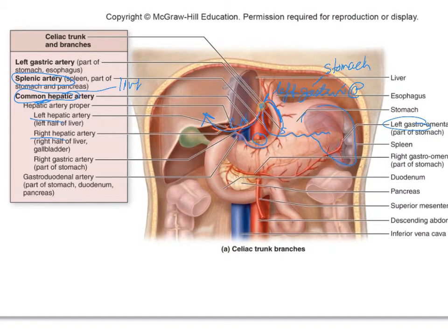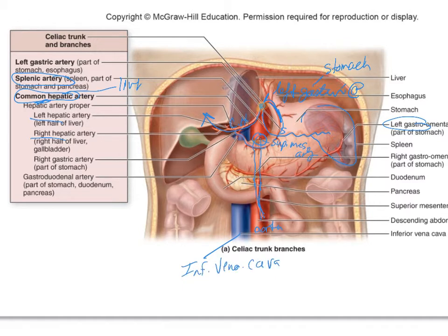Remember you've got the superior mesenteric artery right there — you can kind of see it coming out right here and snaking down, and then it gives little branches going out throughout all of the mesentery. You can still see your aorta right there, and right there is your inferior vena cava. Directionality is that way for the arteries and that way for the veins.